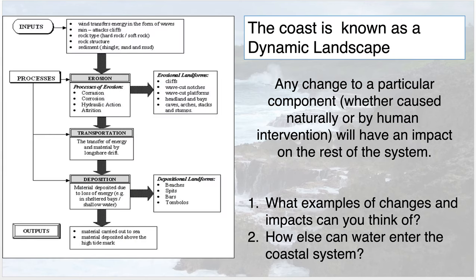If we think about the coast as a dynamic landscape — remember dynamic means it's always moving, it's never the same — you go to a beach one day, a storm occurs overnight, and the next day it looks completely different. More so than any other landscape, the coast is always changing, making it an exceedingly dynamic landscape.